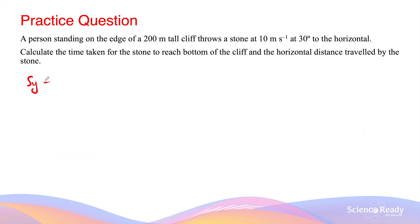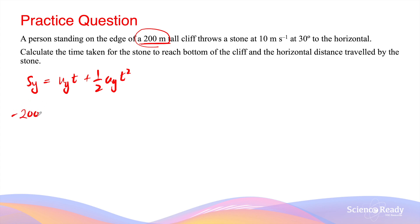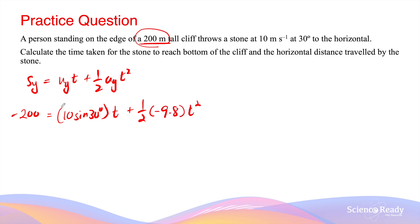We use Sy = uyt + ½·ay·t² to find the time of flight. The vertical displacement is −200 meters, because the stone ends up 200 meters below the starting point. Substituting: −200 = (10·sin30°)·t + ½·(−9.8)·t². We rearrange this equation to form a quadratic equation.